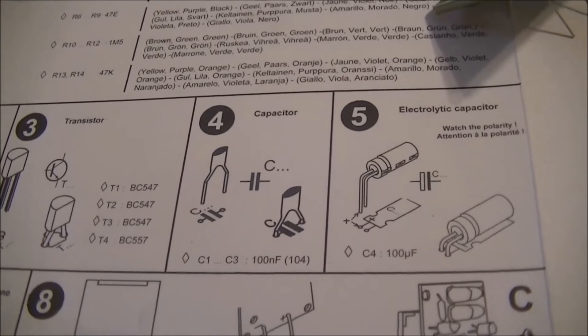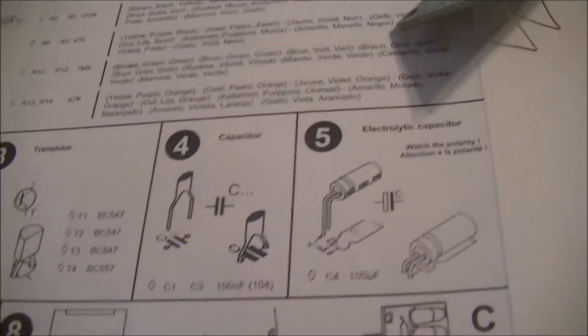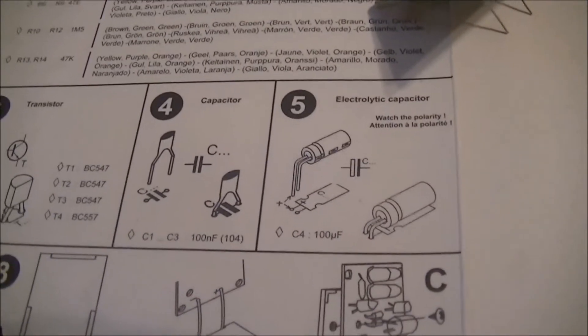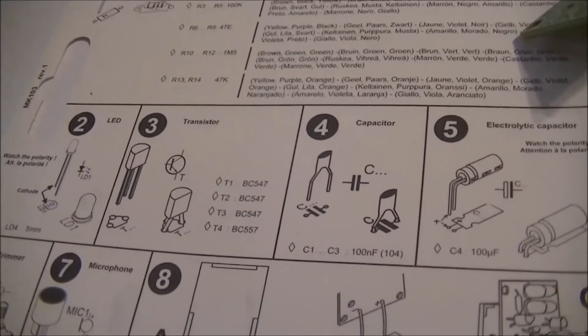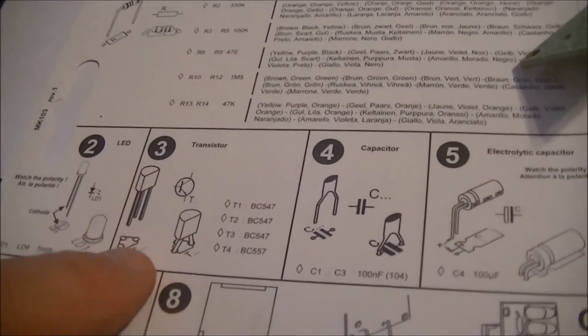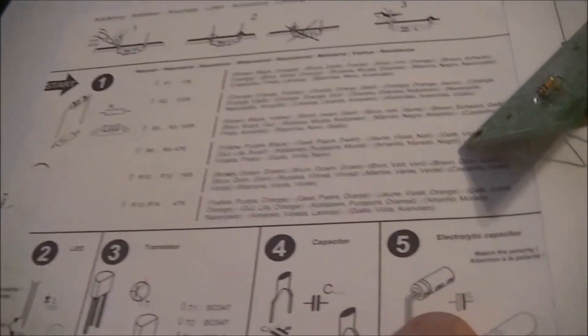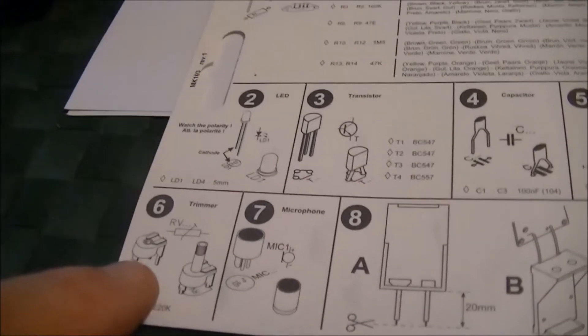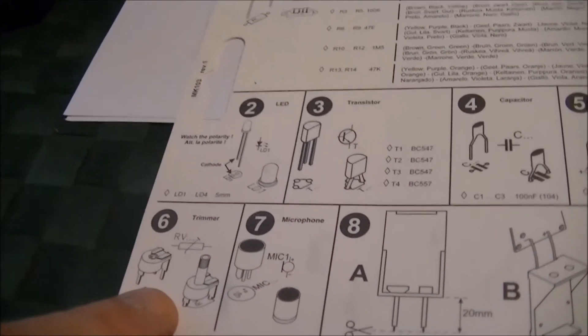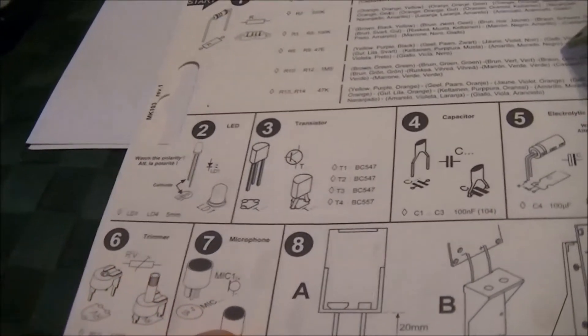Now these transistors are 547s except for one which is a 557. These are MOSFET transistors. I will get to that a little bit later. Transistor, capacitor, electrolytic capacitor, LED, your variable resistor or trimmer, microphone.